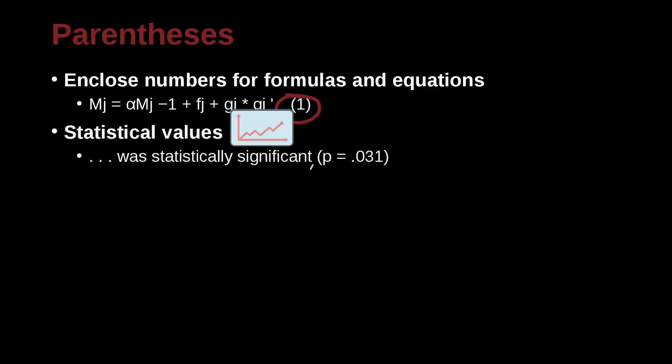Statistical values, of course, we also use parentheses. So when you're writing a value, for example, a p-value, you separate it from the text using the parentheses. Always remember a space before the parentheses and then a space after. Unless it's the punctuation, then there's no space.